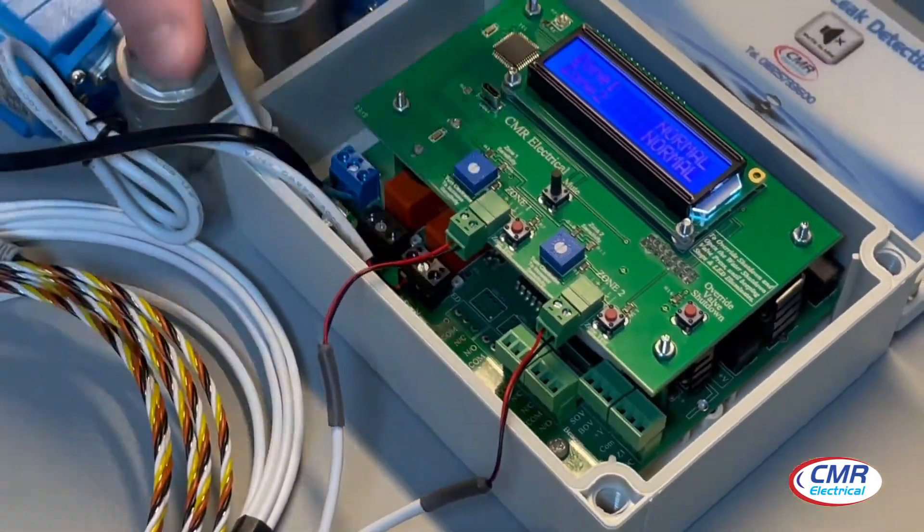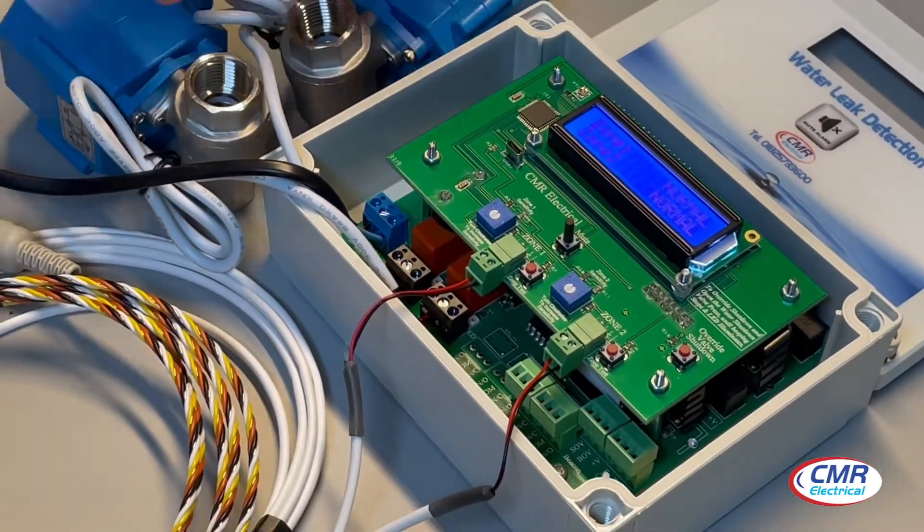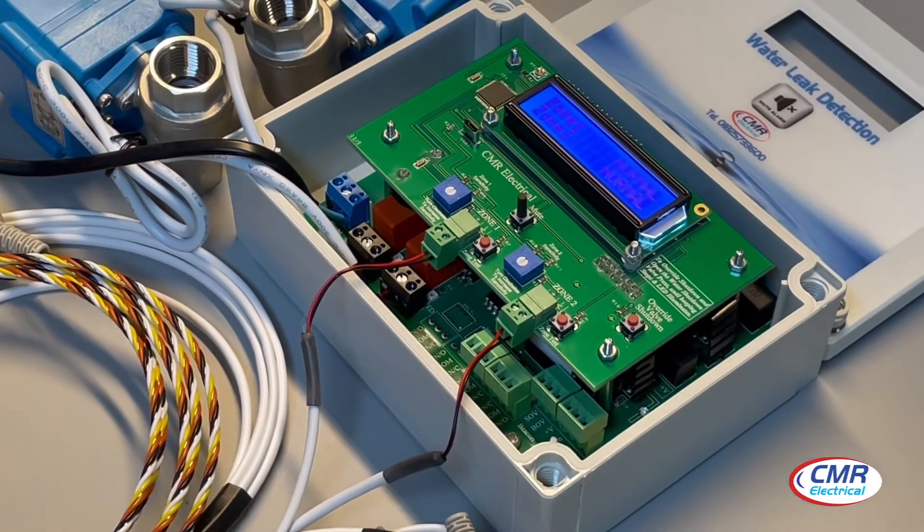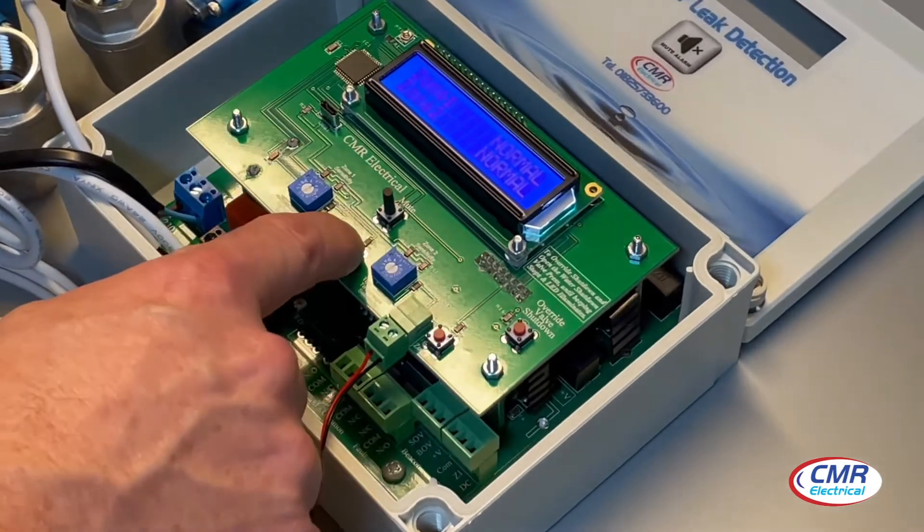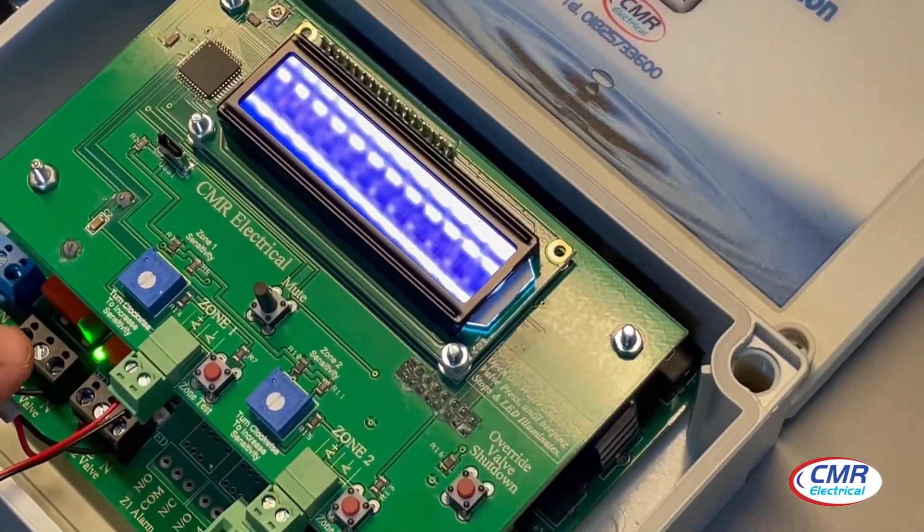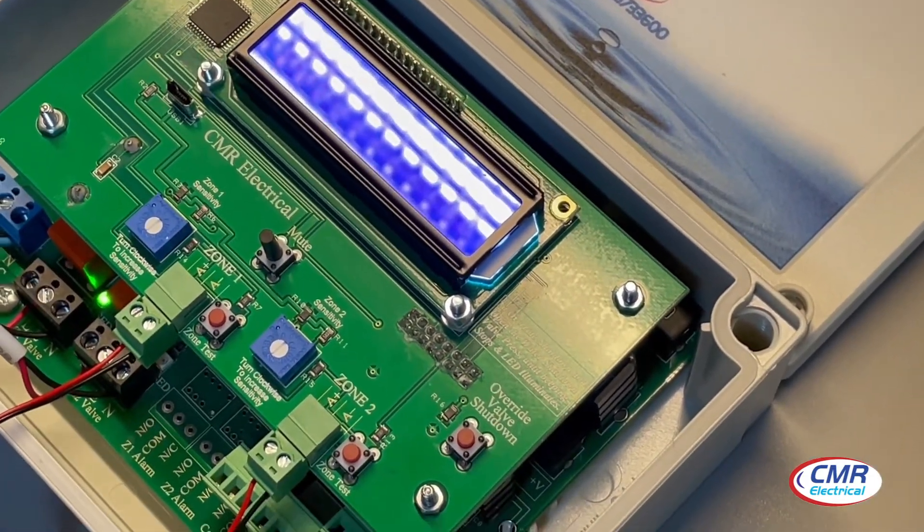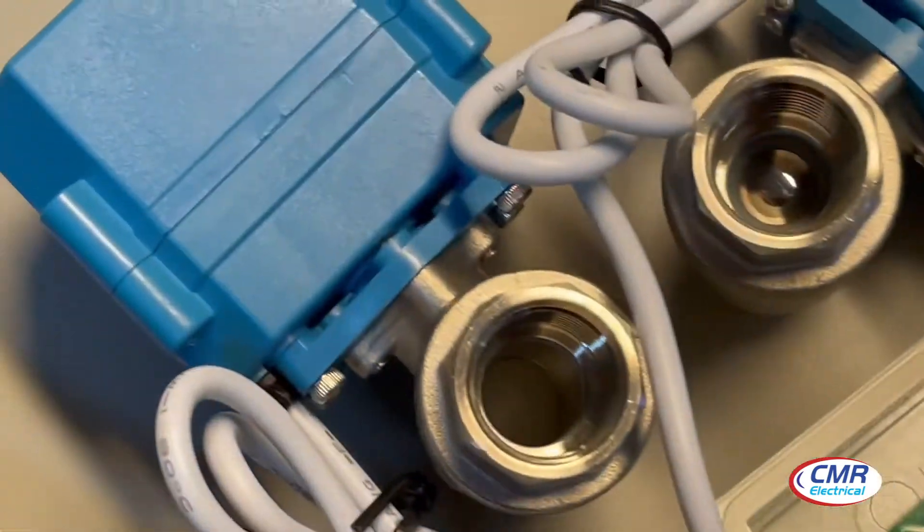Just to show the operation of the valves and how the valve works, I'll put zone 1 into alarm and show you how the valve turns on and off. Put zone 1 into alarm, a little LED comes on, and as you can see, the valve is starting to close.